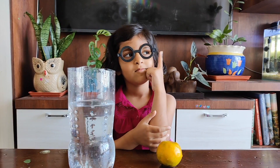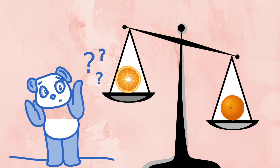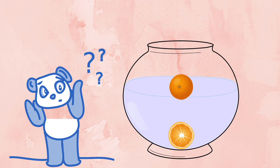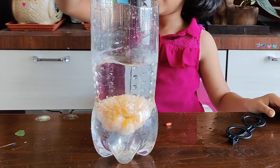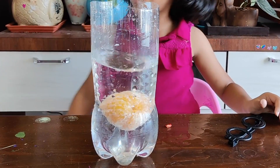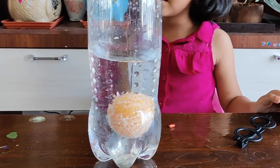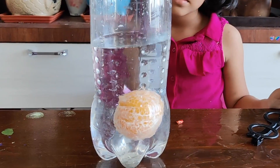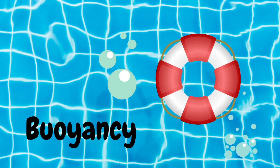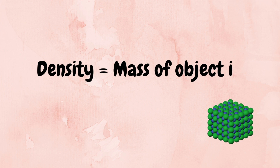So why does this happen? The unpeeled orange seems to have more weight than the peeled orange, but the unpeeled orange was floating and the peeled orange sank. The peeled orange sank because its outer layer was removed — this outer layer is what helps an orange float in water. The ability of an object to float is called buoyancy.